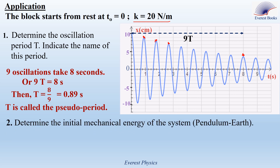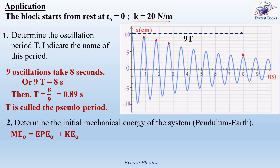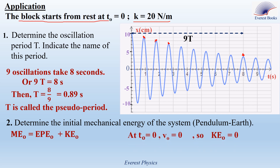Let's move to the second question: determine the initial mechanical energy of the system. The initial mechanical energy equals initial elastic potential energy plus initial kinetic energy. The gravitational potential energy is zero because G is at the reference level. The block starts from rest at t₀ equals 0, so V₀ equals 0, which means KE₀ equals 0.